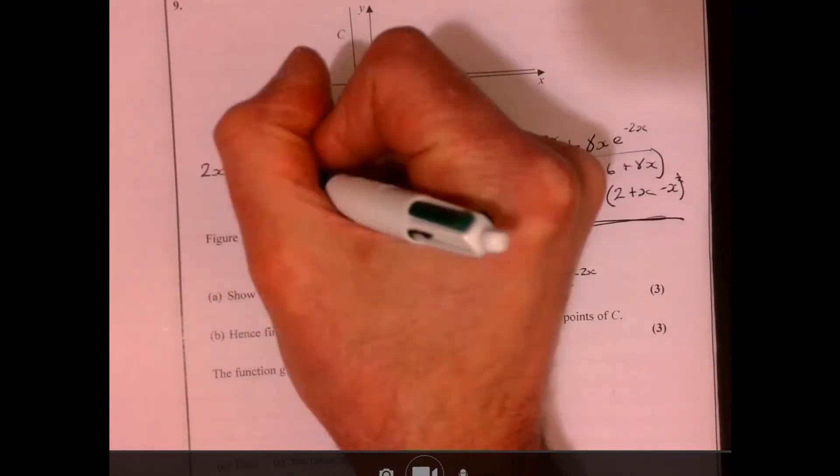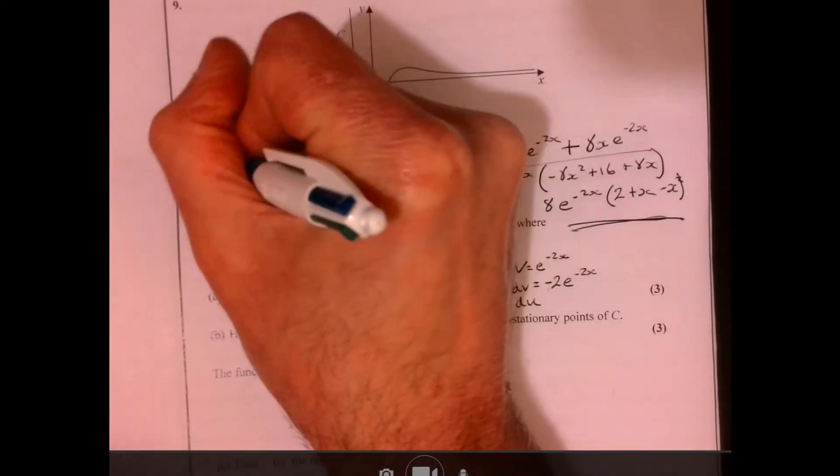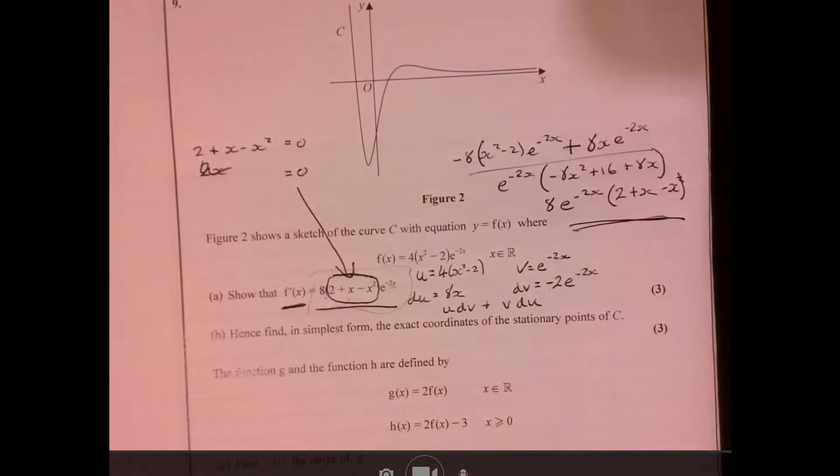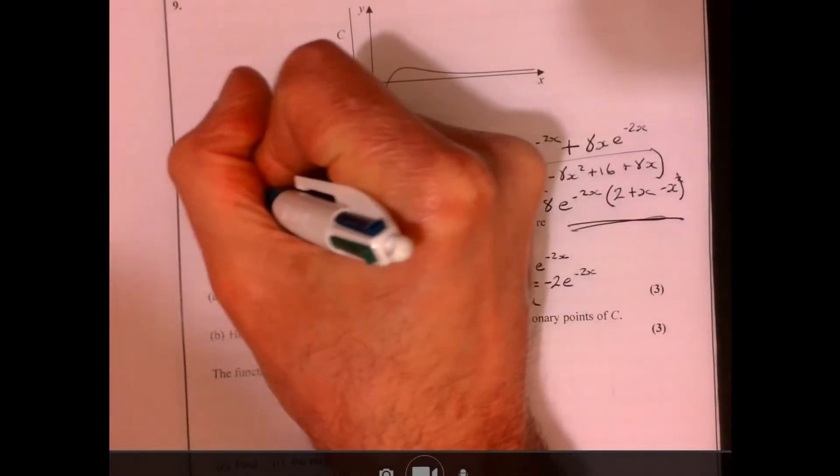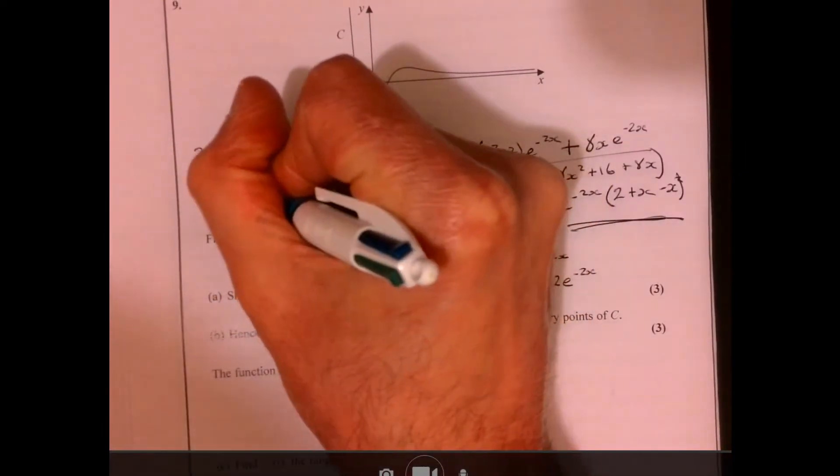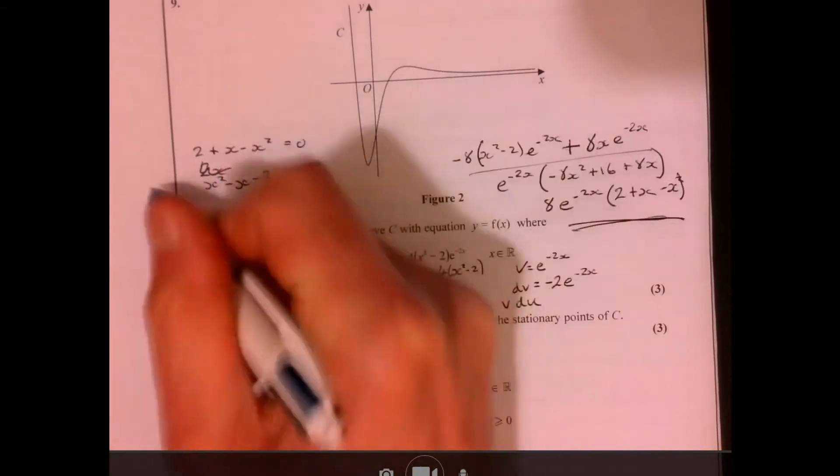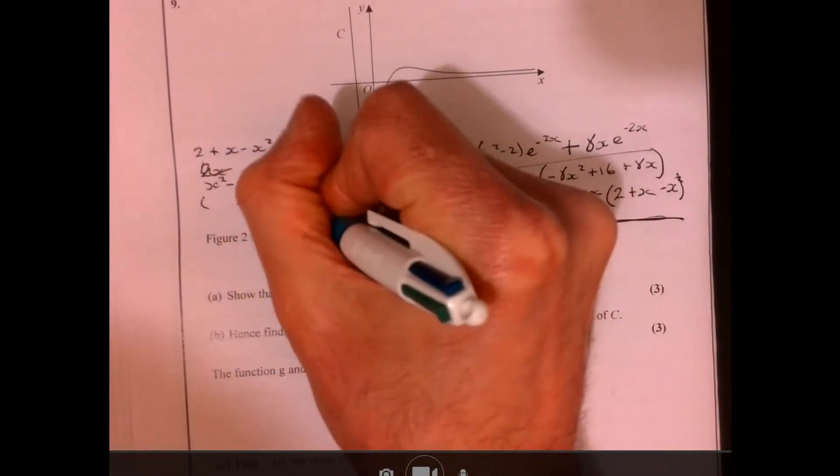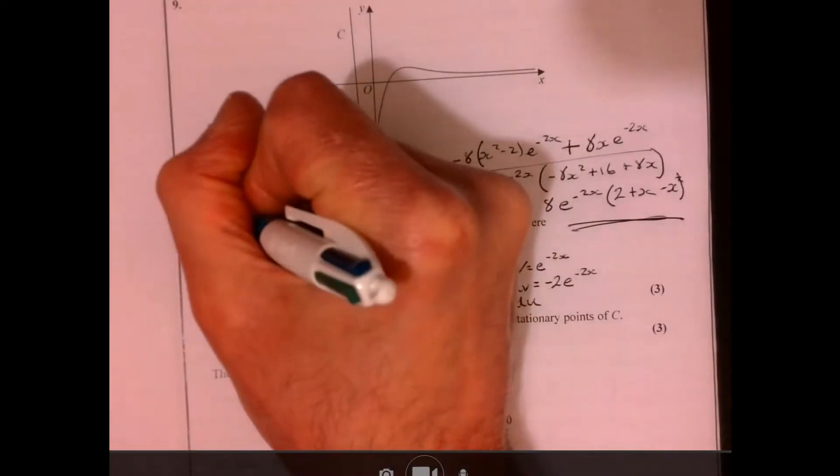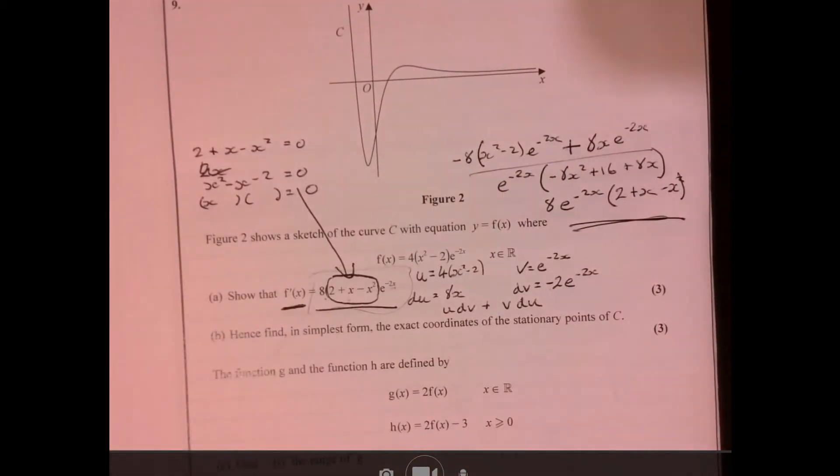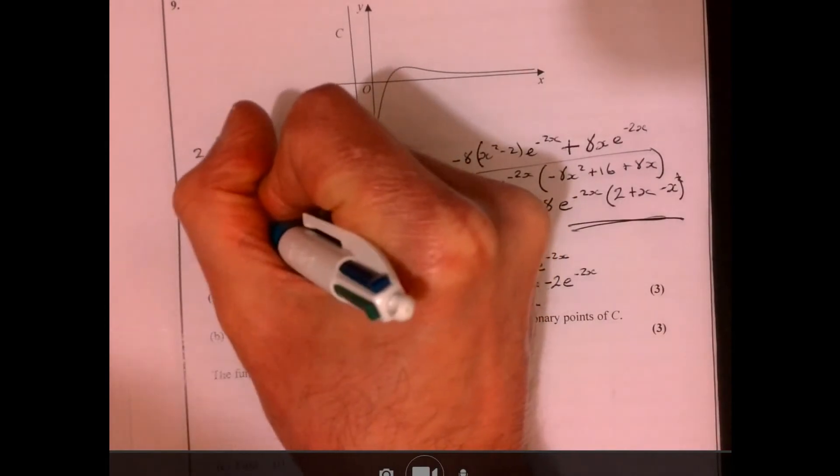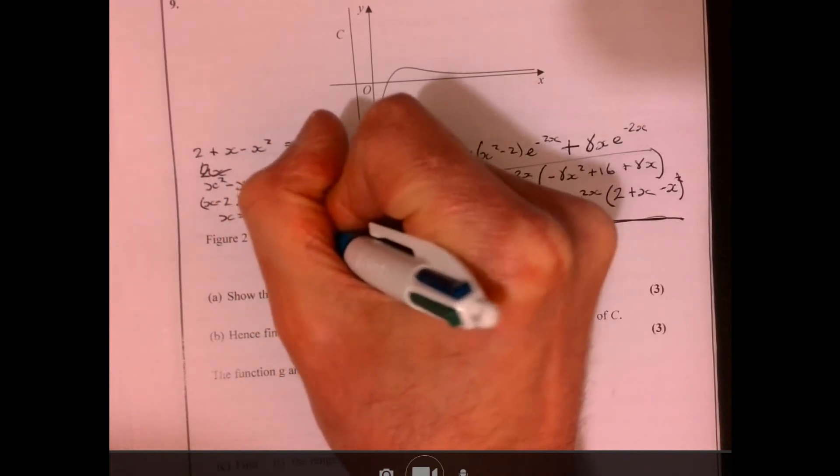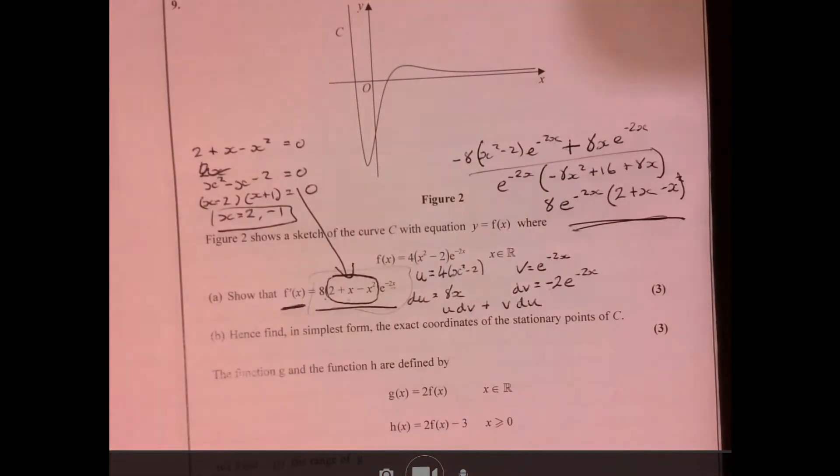So all we've got to do is we've got, let's have 2 plus x minus x squared equals 0. What I tend to do here is I just switch it around. So I've got a positive coefficient of x there. So I've just multiplied everything by minus 1, effectively. And then I can see that I've got x and we're going to have minus 2, x plus 1. So x equals 2 or equals minus 1.